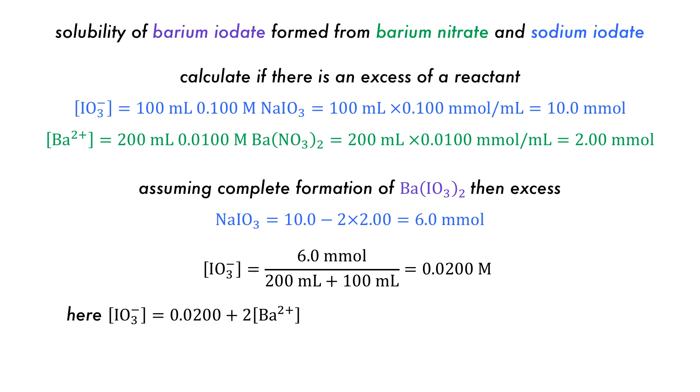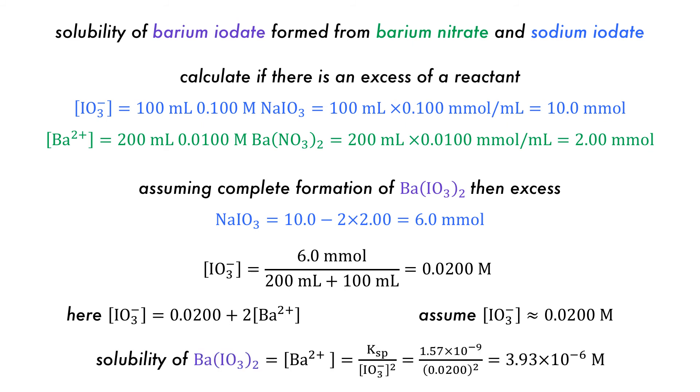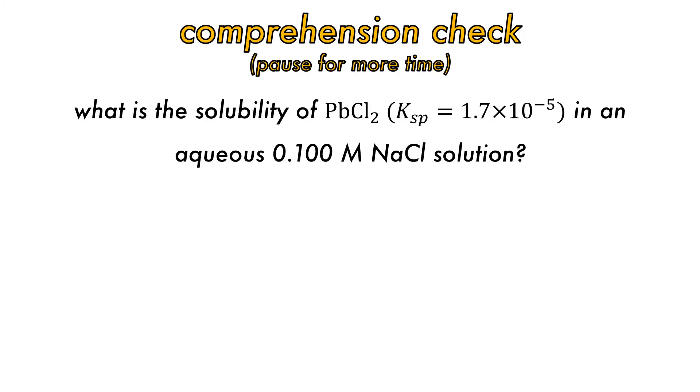Iodate concentration can then be calculated, but since the barium iodate concentration is expected to be low, the iodate concentration from the barium iodate can be considered negligible. A provisional solubility can then be determined using this approximation, and since the value is some 4 orders of magnitude lower than 0.02 mol, then the assumption can be considered valid. Let's check comprehension.